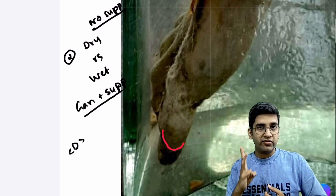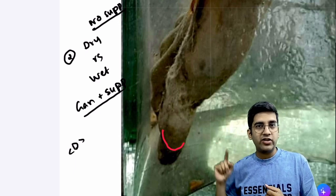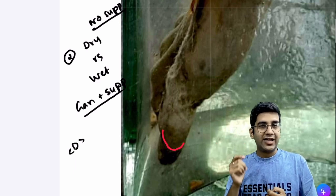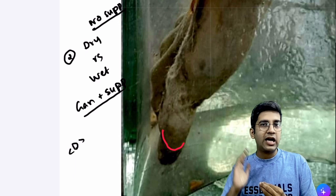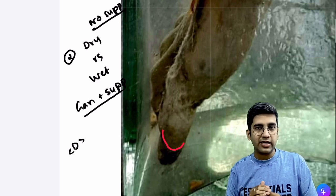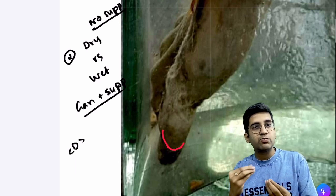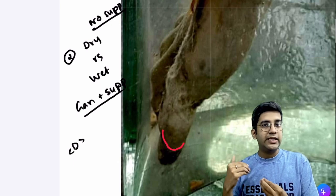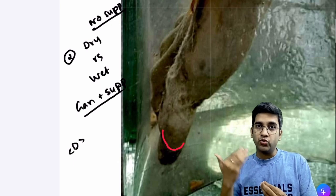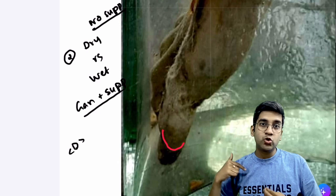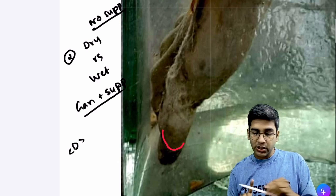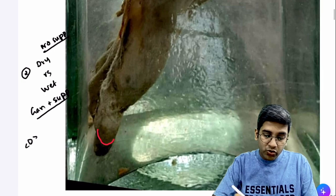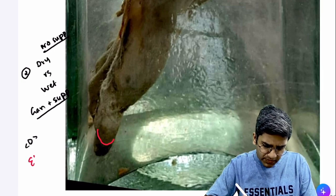So there are three points of gross differentiation: first, the line of demarcation; second, the consistency — if it's soft and soggy, think wet gangrene; if it's dry and hard, think dry gangrene; third, visible pus — if there are pus points oozing, think wet gangrene; if there are no pus points oozing, think dry gangrene. These are the three pointers to differentiate dry from wet gangrene.